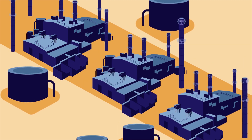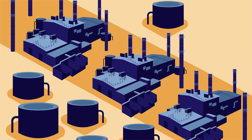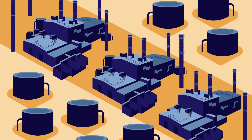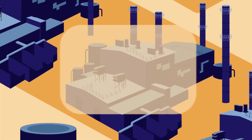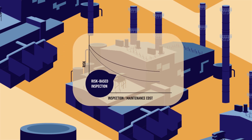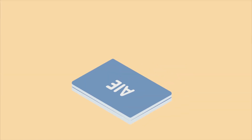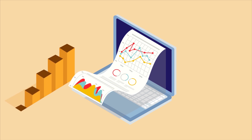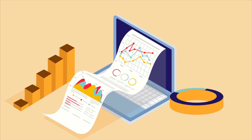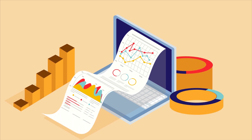The industry has embraced risk-based inspection, RBI, as a leading strategy to optimize inspection and reduce risk for hazardous industrial assets. But does it? Industry-wide case studies completed by AIE indicate that RBI is often poorly implemented and unable to keep up with changing processes and environmental plant conditions.